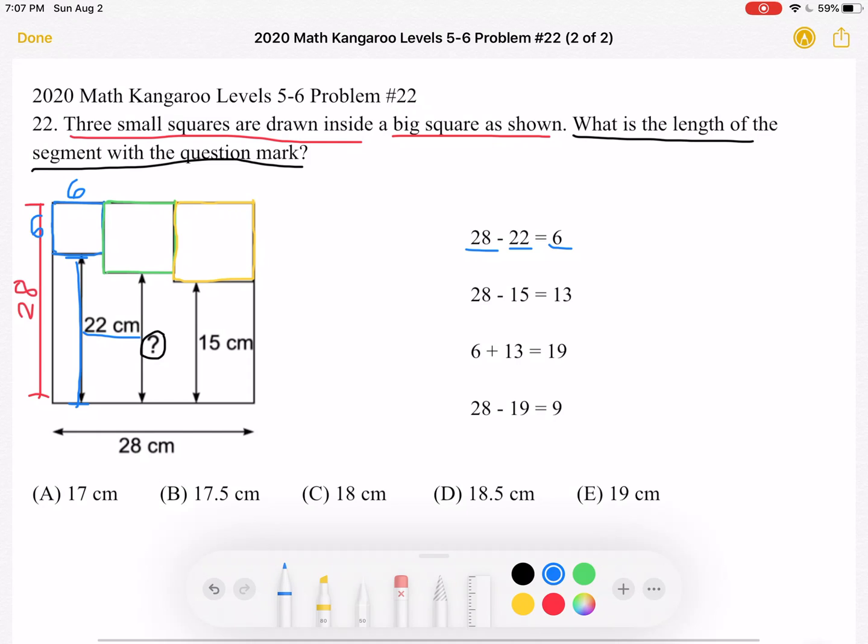We can use similar logic for the yellow square. Again, we know the entire side length of the large square is 28.